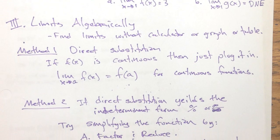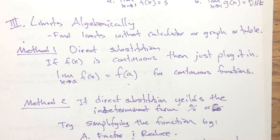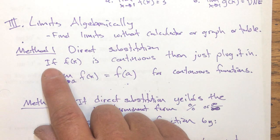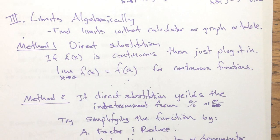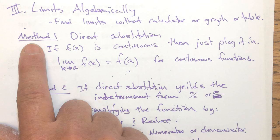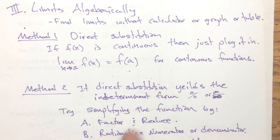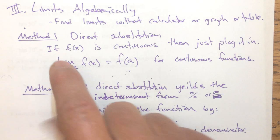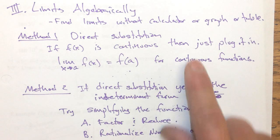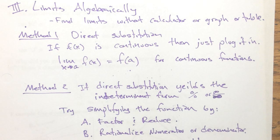We looked at limits algebraically. That means when we find the limit without a calculator or graph or table. And we use three methods here. Method one, direct substitution. Never forget about method one. You might want to jump to one of these other methods, but this is really the go-to method. Plug it in. See if it works.